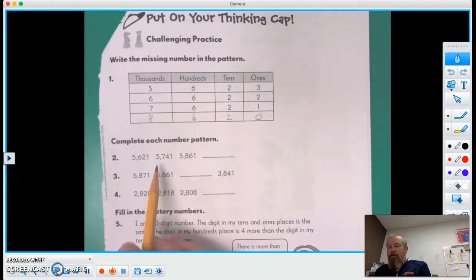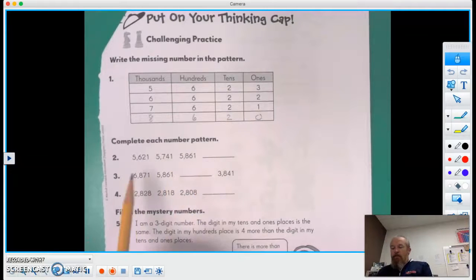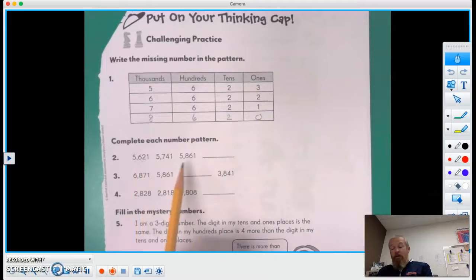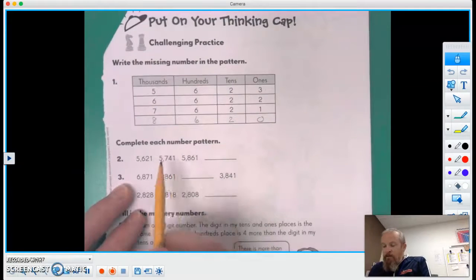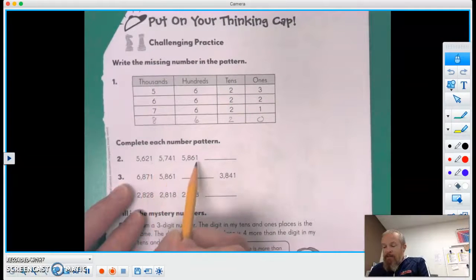Complete each number pattern. So here: 5621, 5741, 5861. So let's see. Oh, the ones column stays the same.